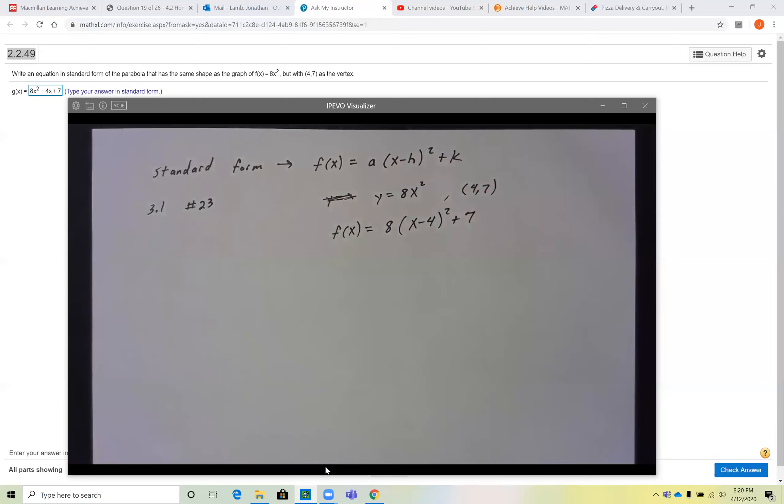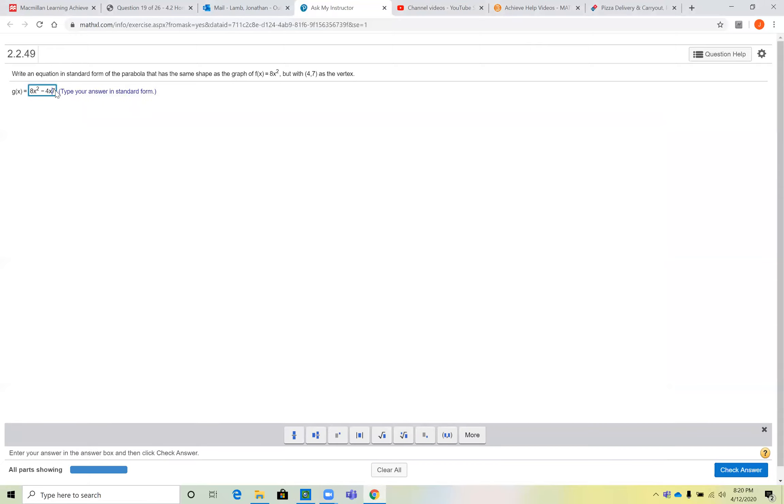Should be very easy just to plug that right in. Now I'll try that here, should be 8 times the group, so notice here I'll say 8 times the group, (x - 4) quantity squared...